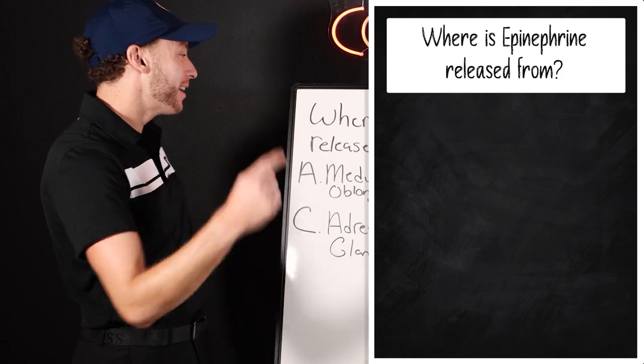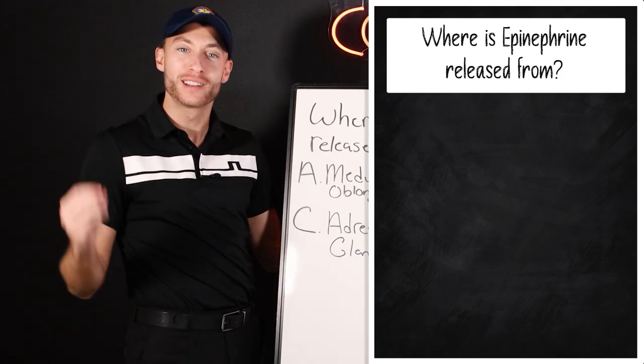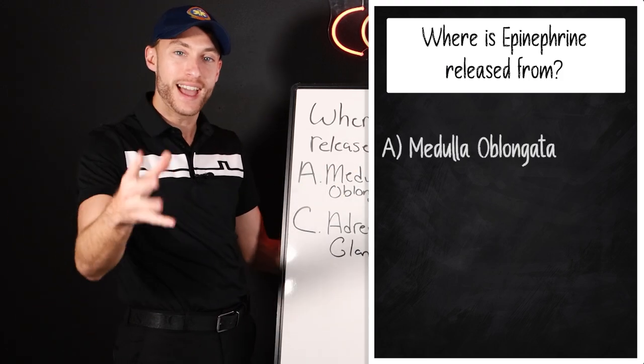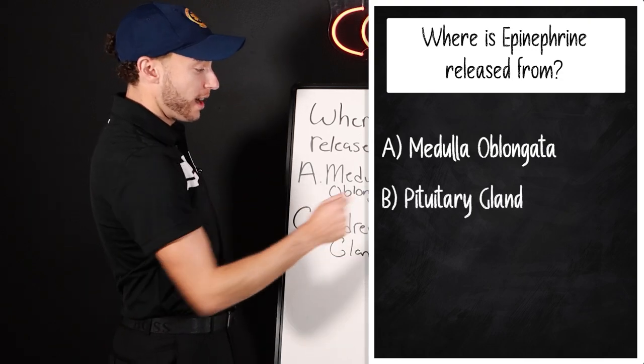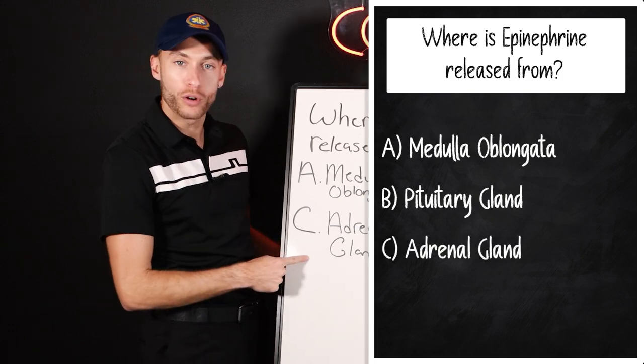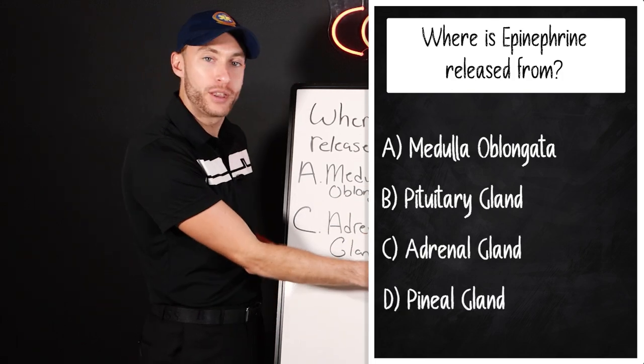Here we go. Where is epinephrine released from? Is it A, the medulla oblongata? Is it B, the pituitary gland? Is it C, the adrenal gland? Or D, the pineal gland?